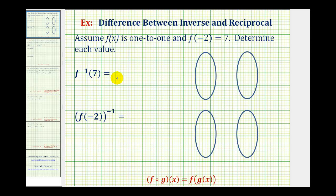The notation here is extremely important. This negative one here indicates inverse function notation. This is f inverse of seven. This negative one here is an exponent, so to evaluate this, we find the value of f(-2) and then raise it to the power of negative one, which would be equal to the reciprocal of f(-2).